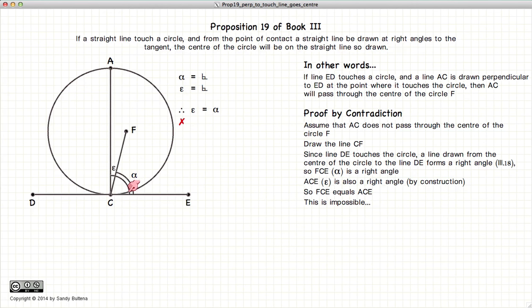Which is impossible, unless of course AC passes through the center of the circle F. And thus we have demonstrated that if AC and DE are perpendicular, C is the point of touching of DE, then this angle must be a right angle.